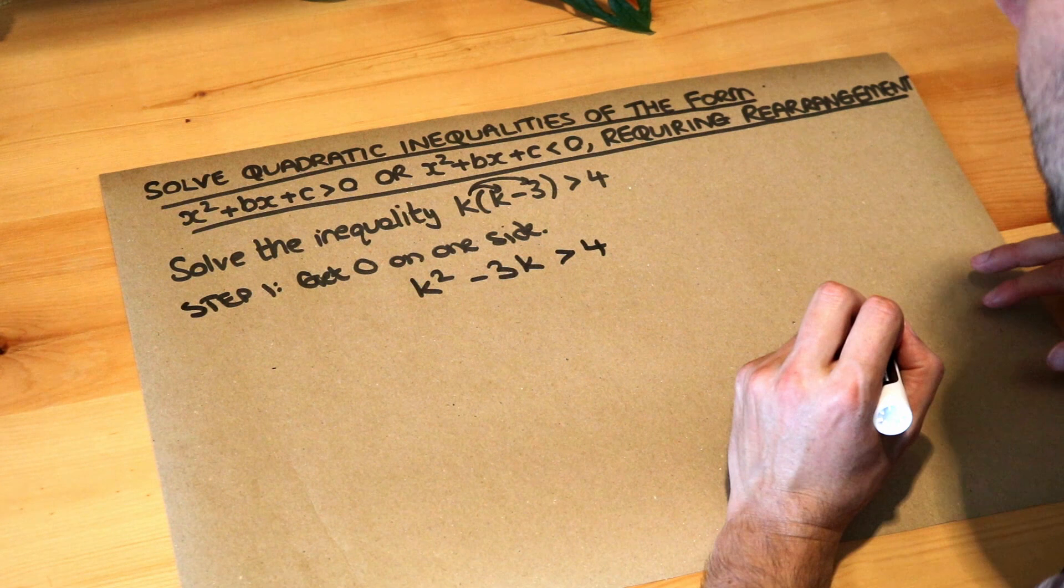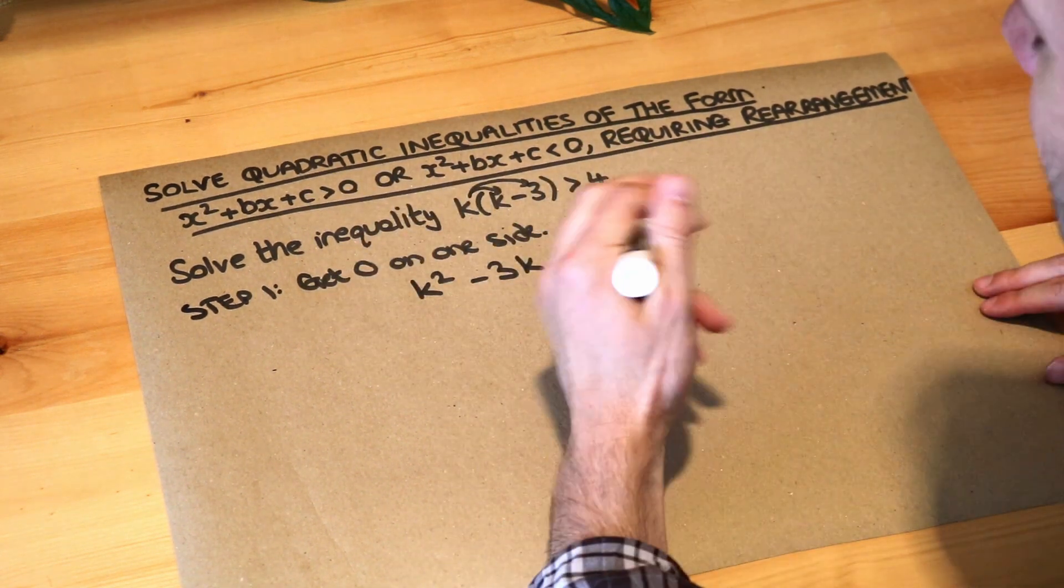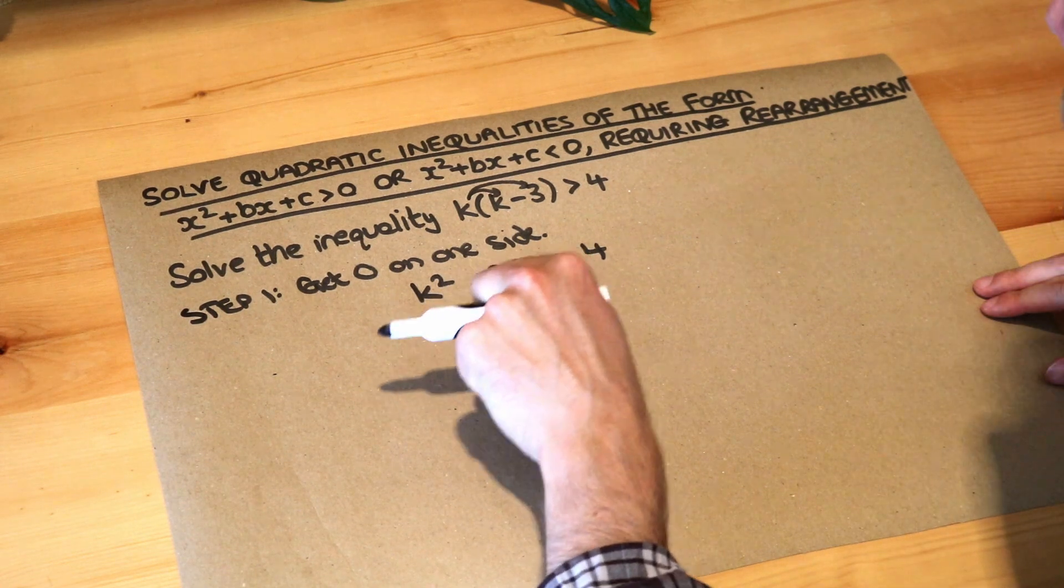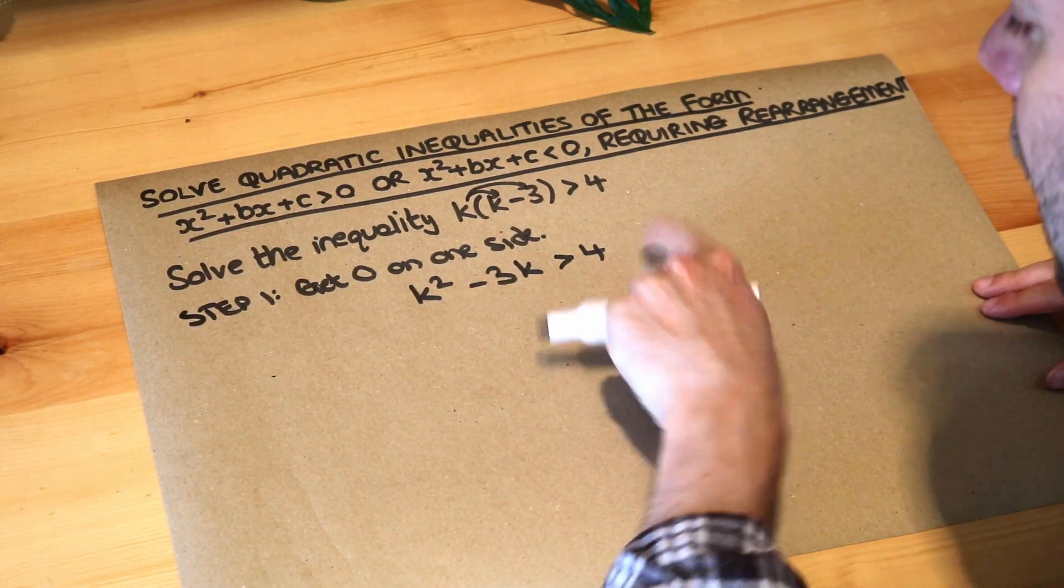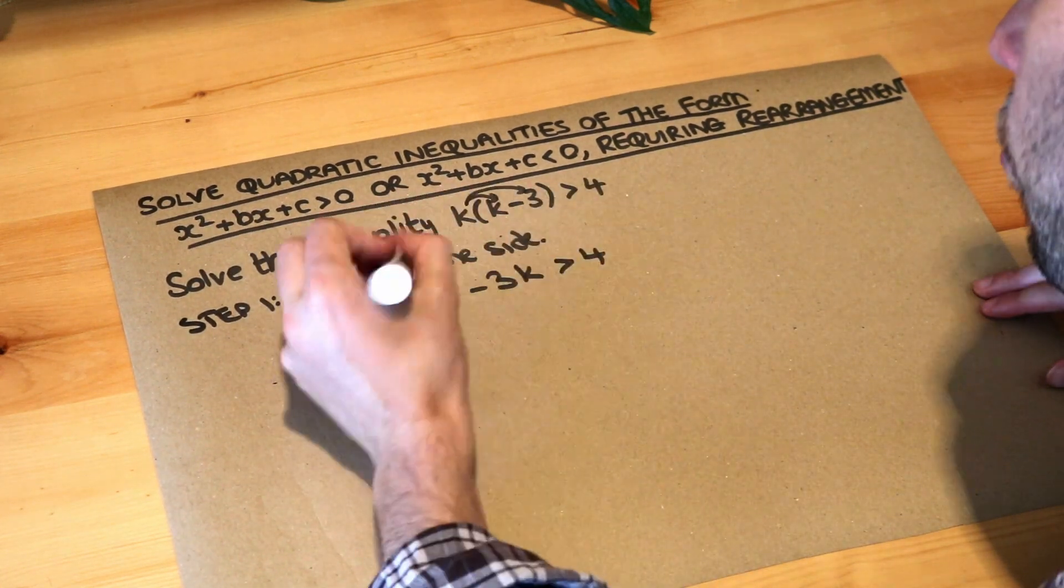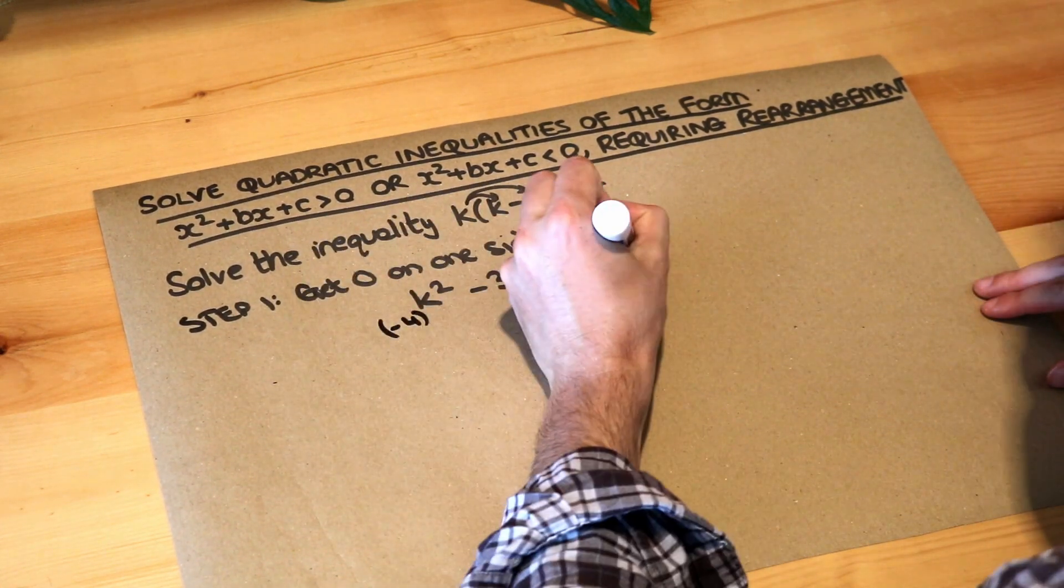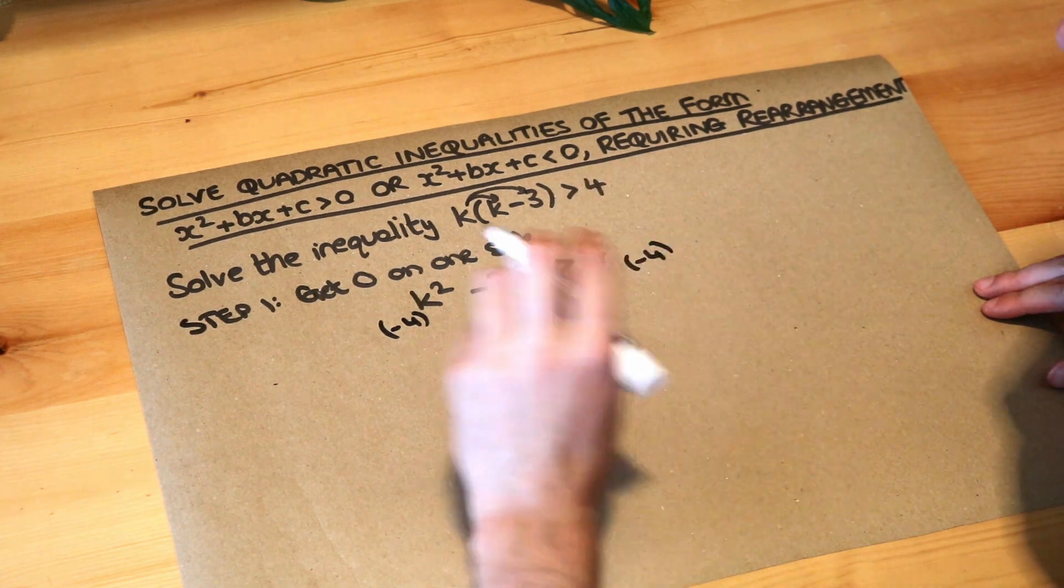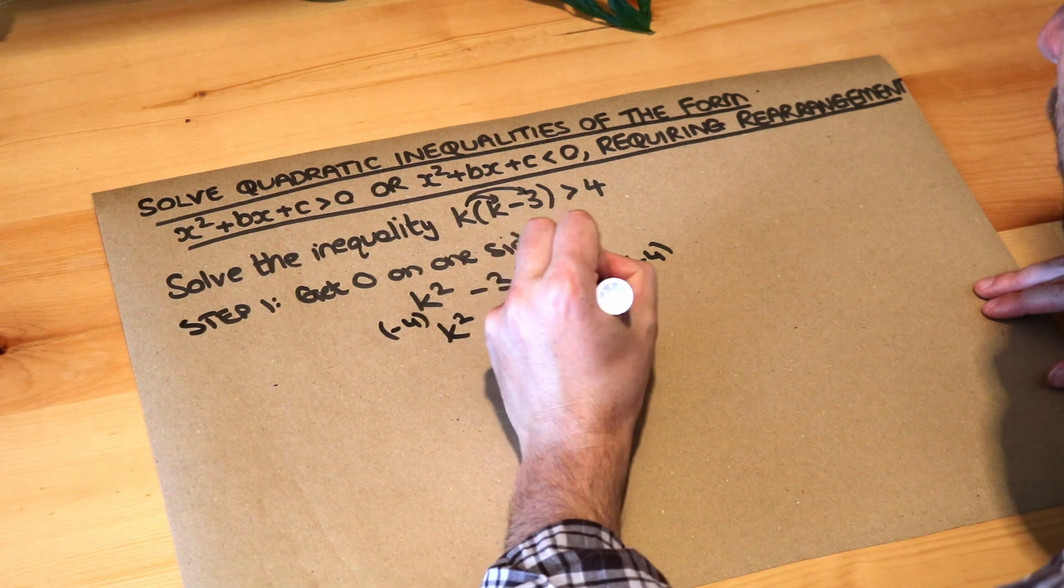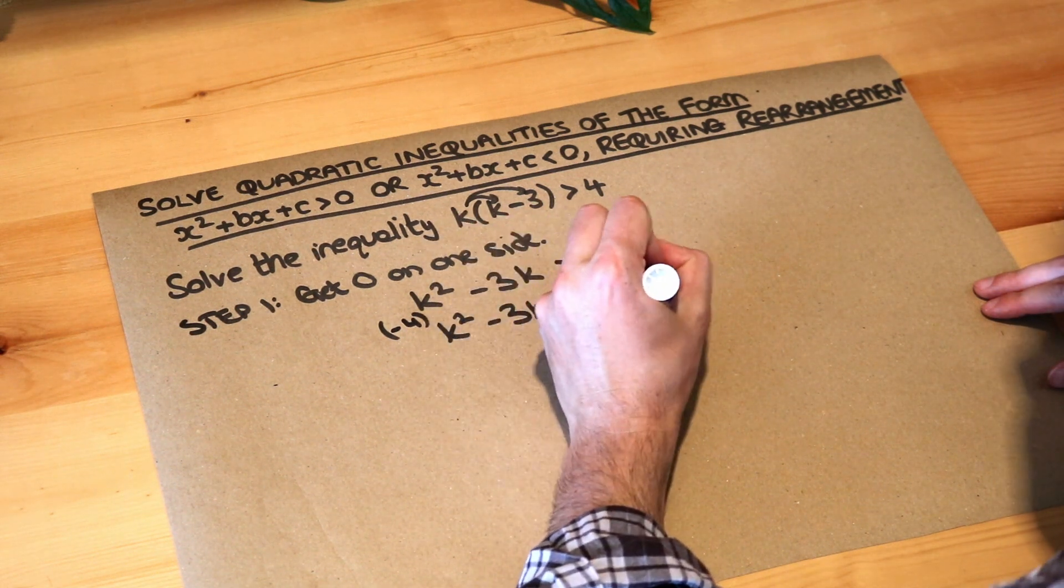We expanded the brackets and we want zero on one side. Ideally we want the square term, in this case the k squared term, on the side where it's positive. So we don't want to move the k squared over here because then it'll be negative k squared which is bad. I'm going to subtract four from both sides to get rid of that four so we get k squared minus three k minus four is greater than zero.